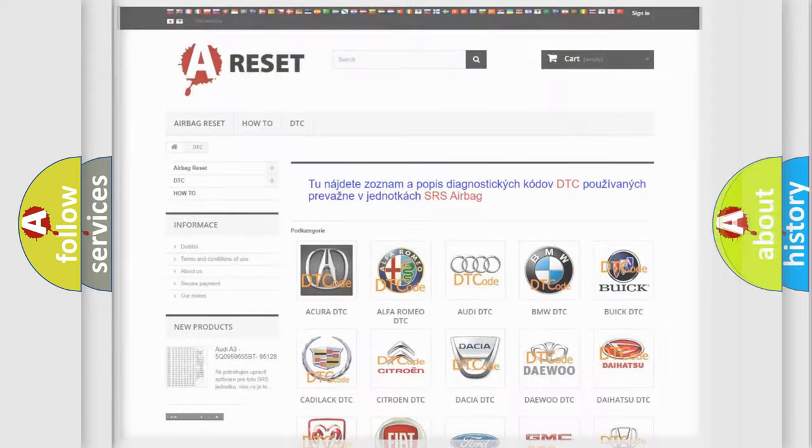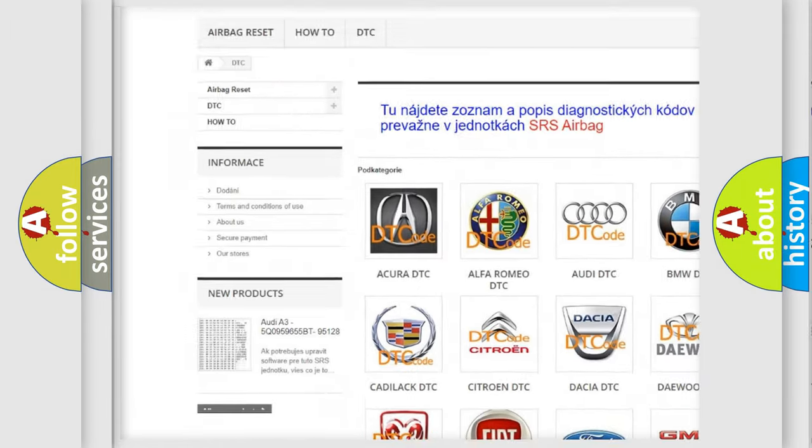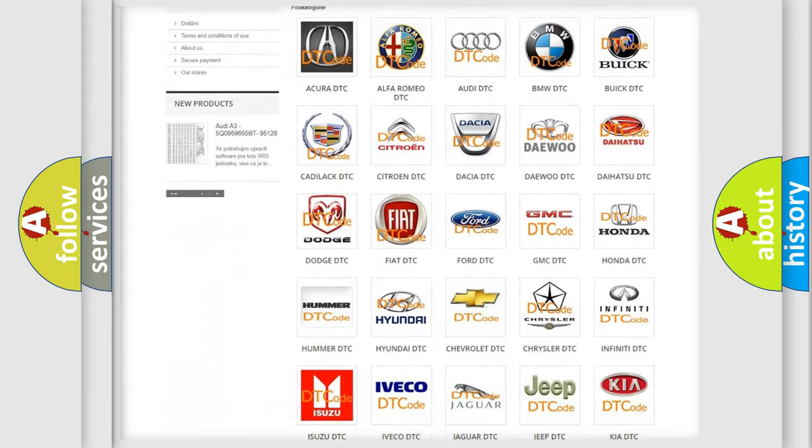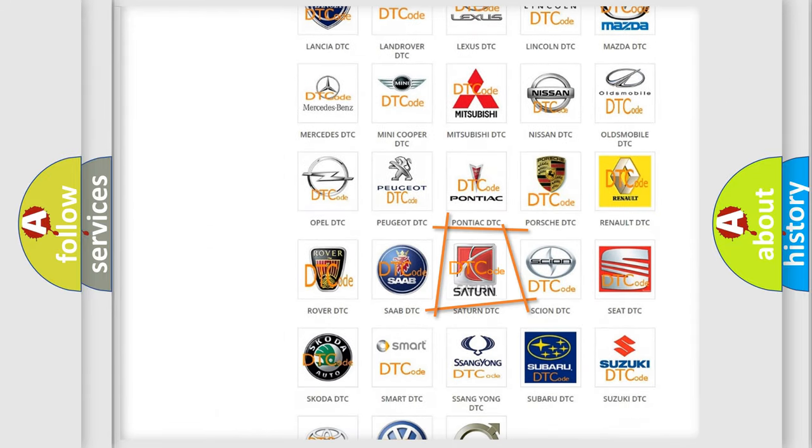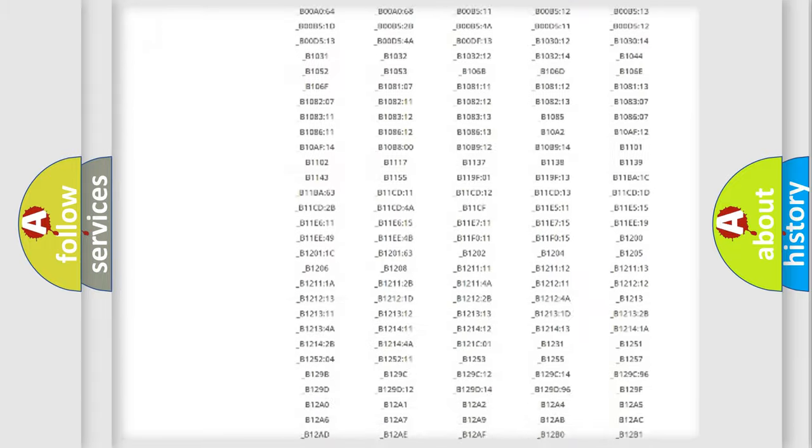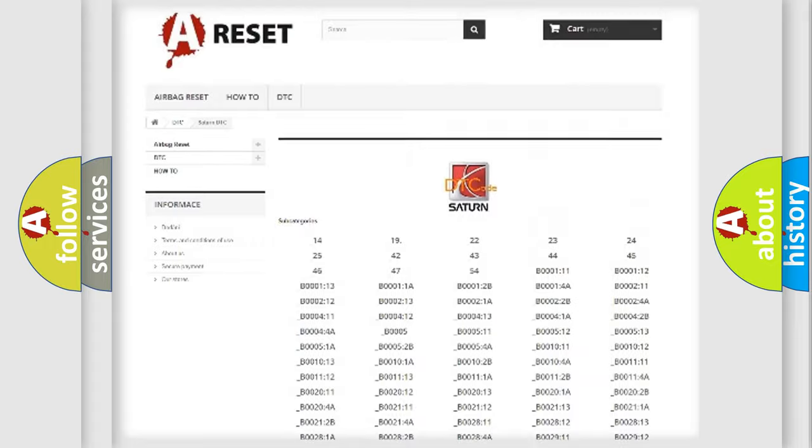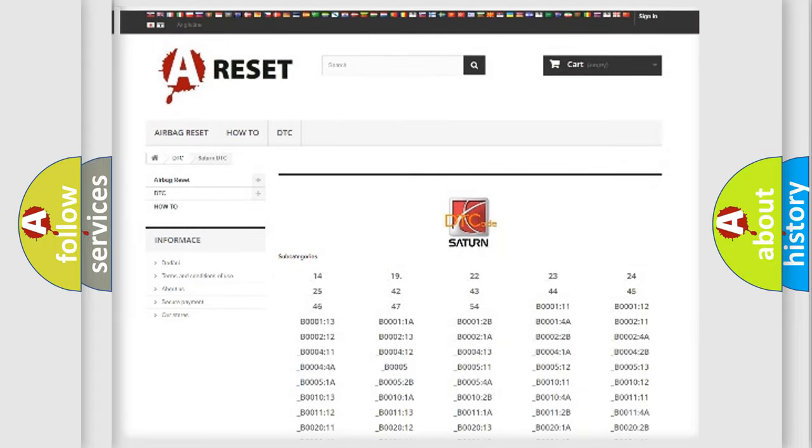Our website airbagreset.sk produces useful videos for you. You do not have to go through the OBD2 protocol anymore to know how to troubleshoot any car breakdown. You will find all the diagnostic codes that can be diagnosed in Saturn vehicles. Also many other useful things.